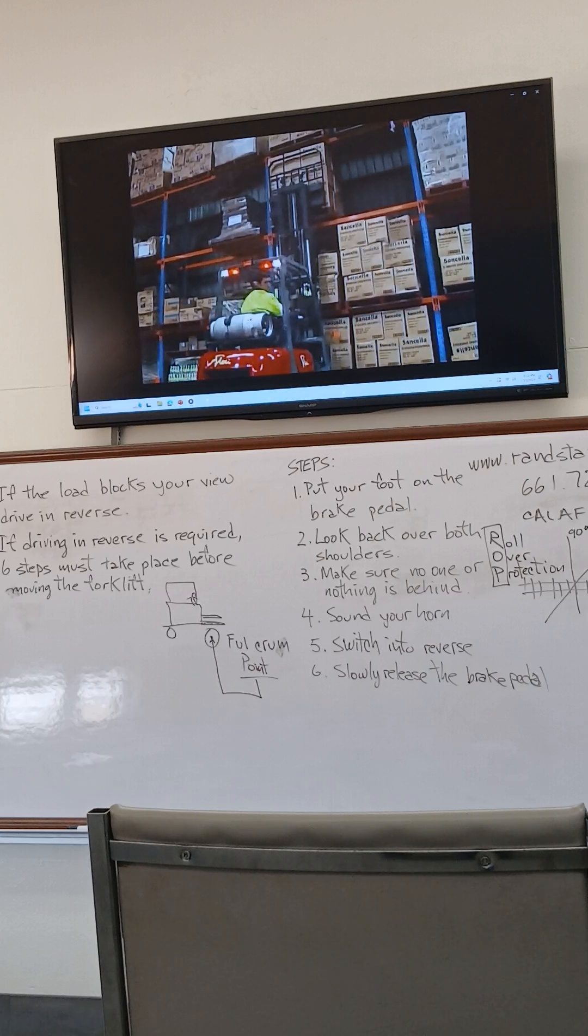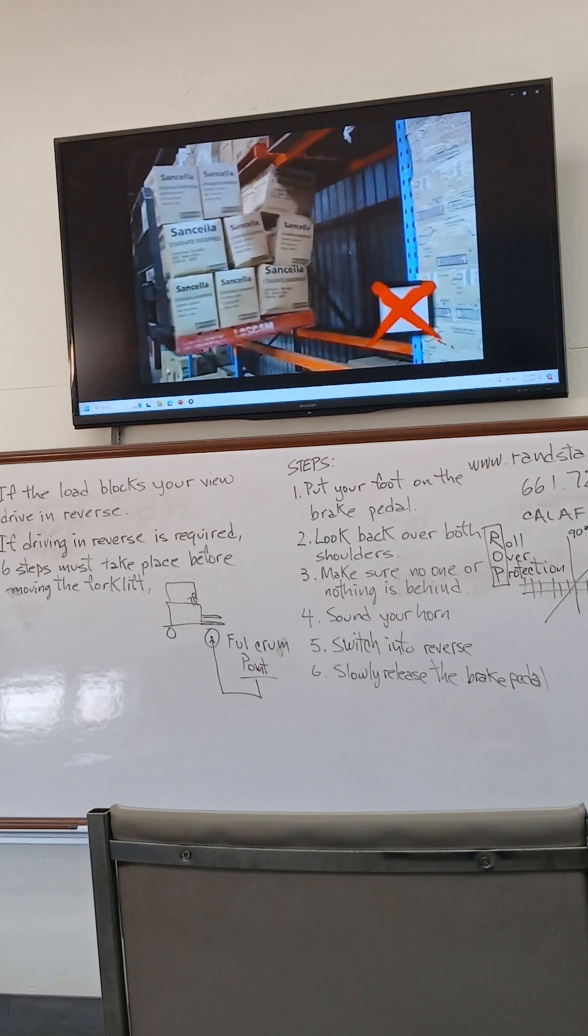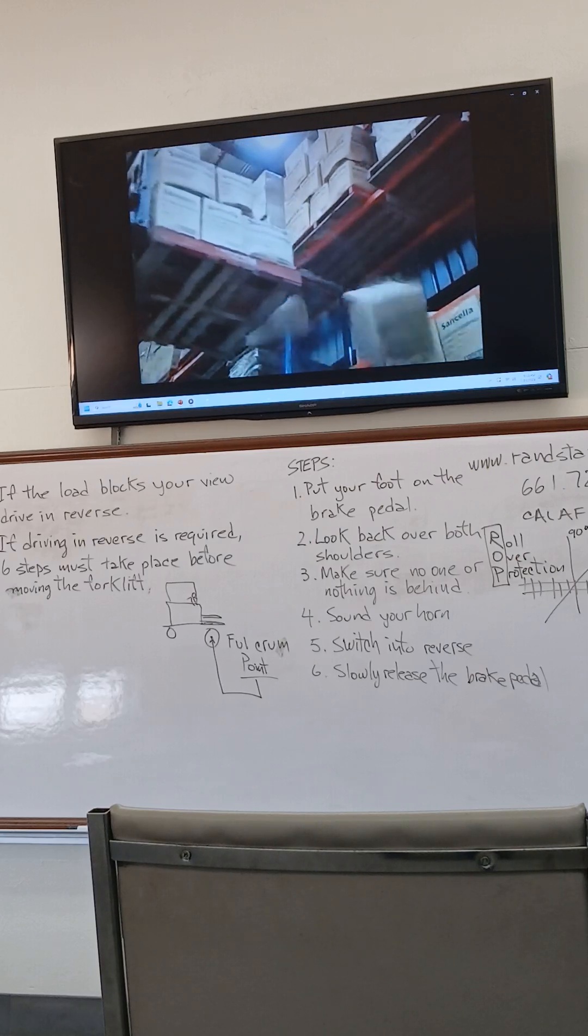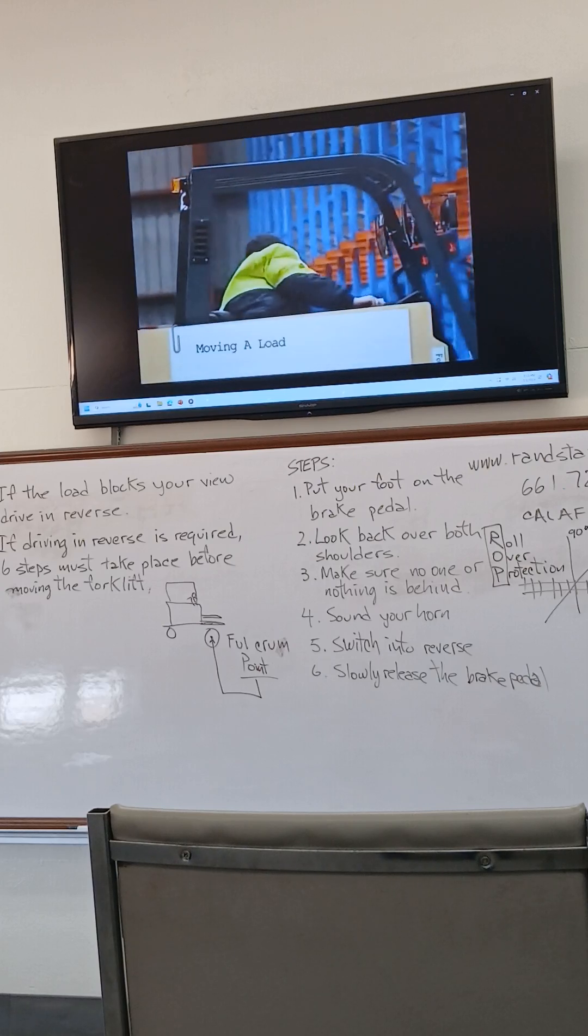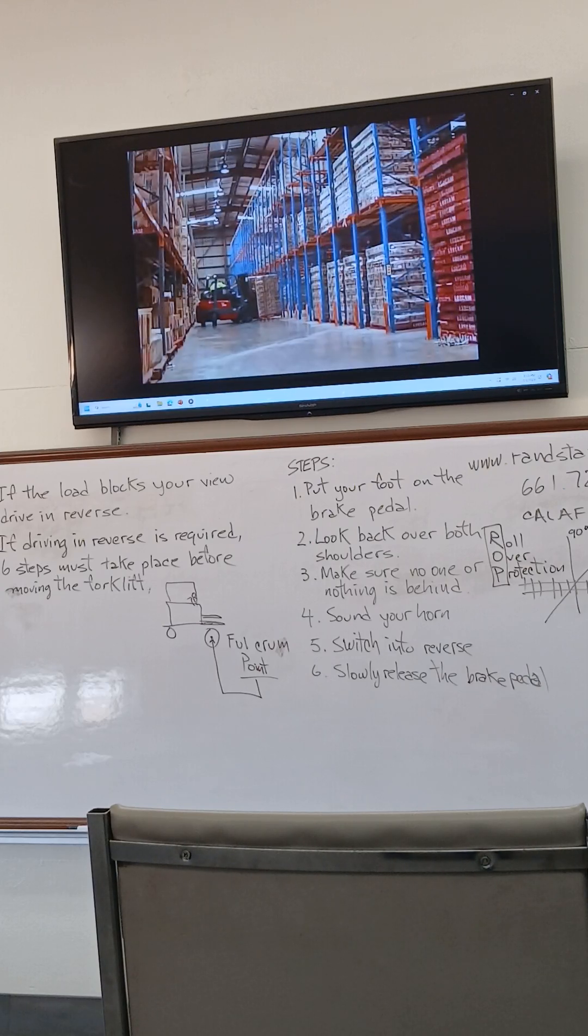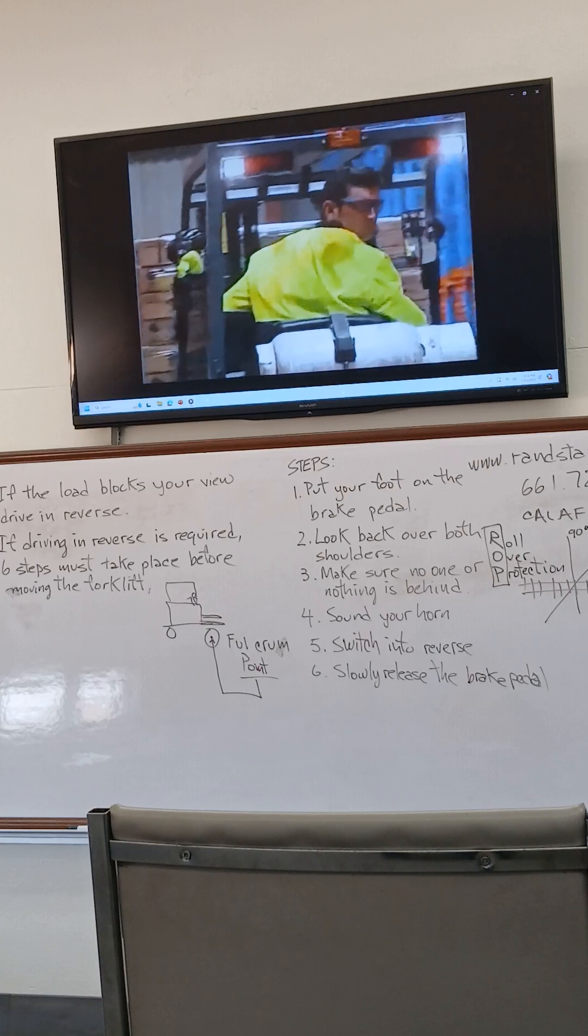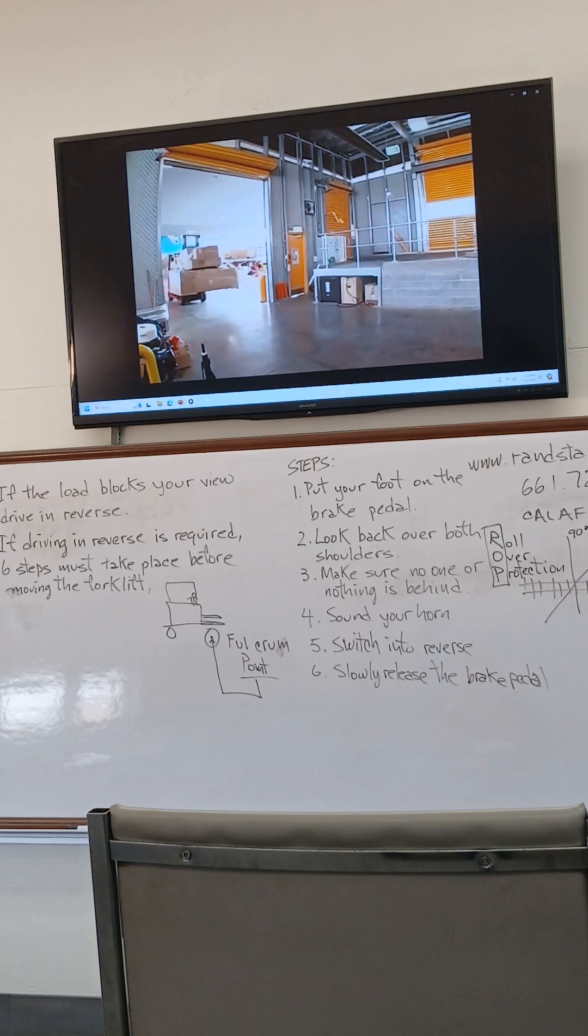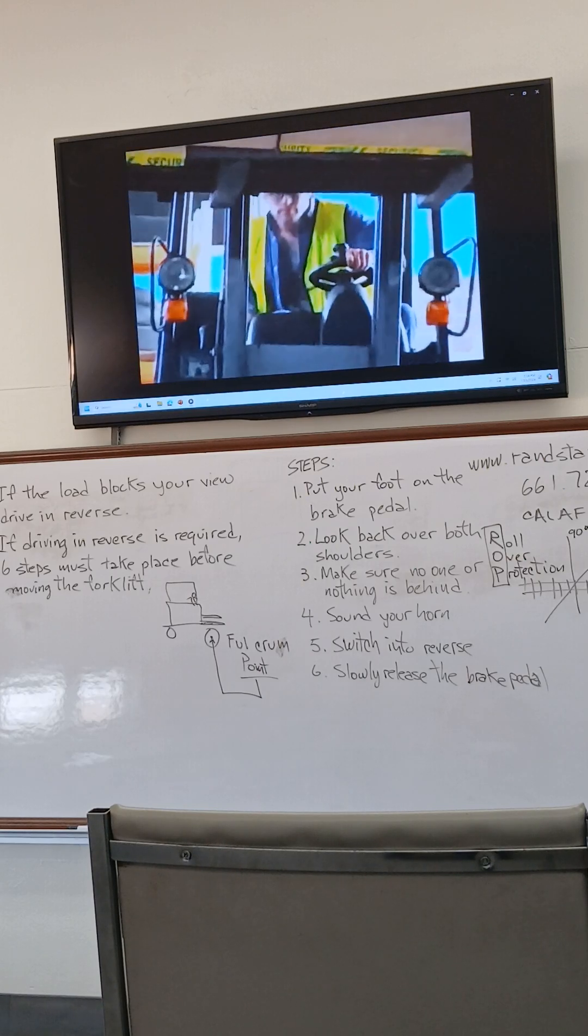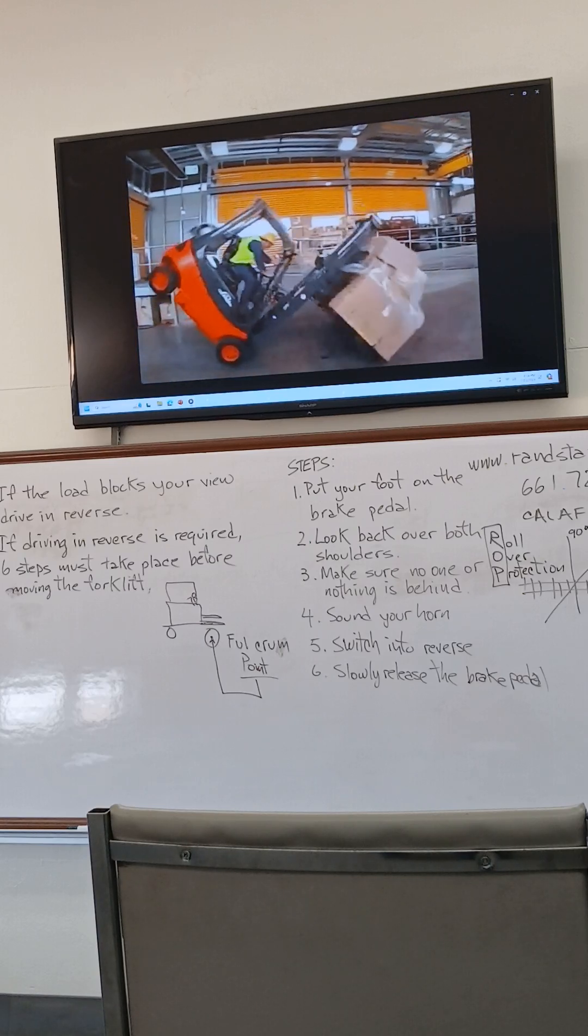Using back tilt when lifting a load out of racking can result in the load being caught on the rack above. Always ensure you have sufficient clearance. Your view from a forklift is often blocked by the load. If you can't see over the load, drive in reverse. You may need someone to guide you. Raising the load to see under it is not a safe practice. The forklift could tip forward and it limits braking due to the propensity to overturn.